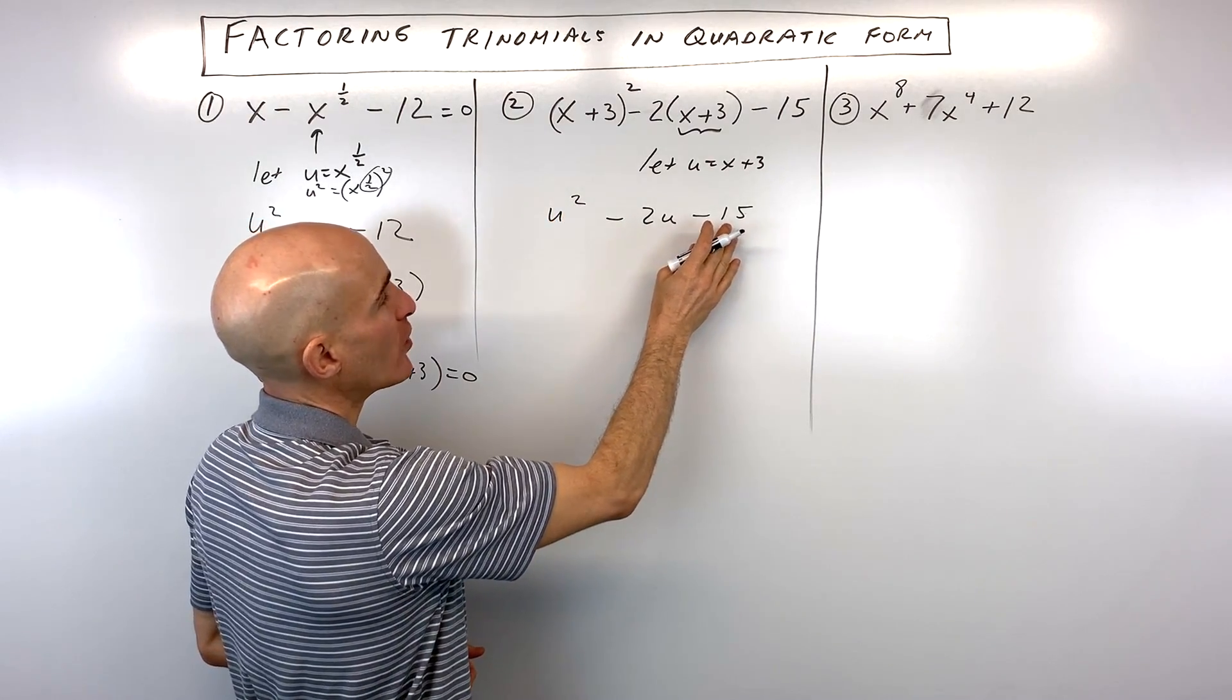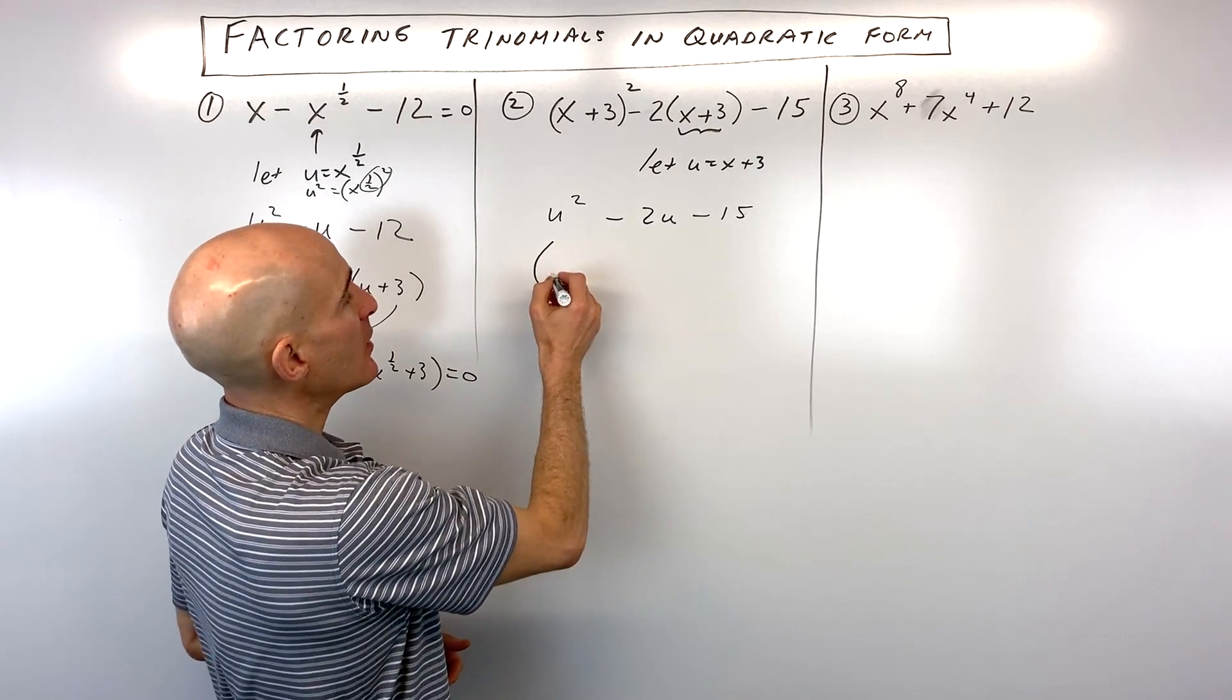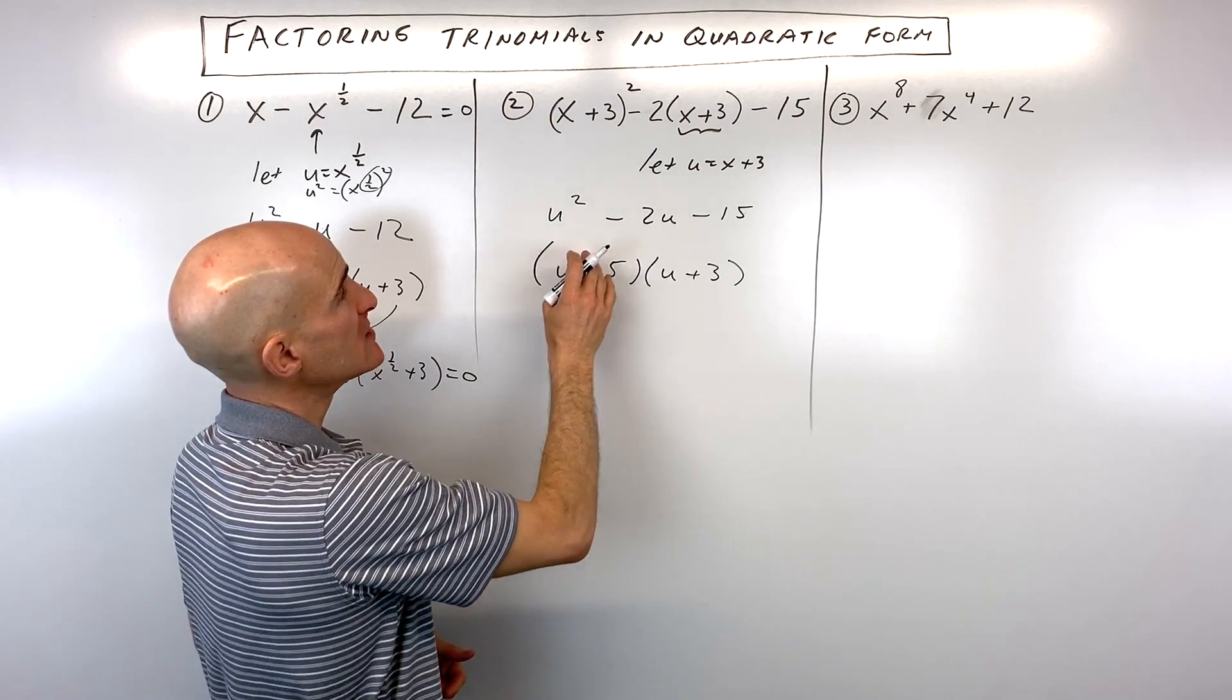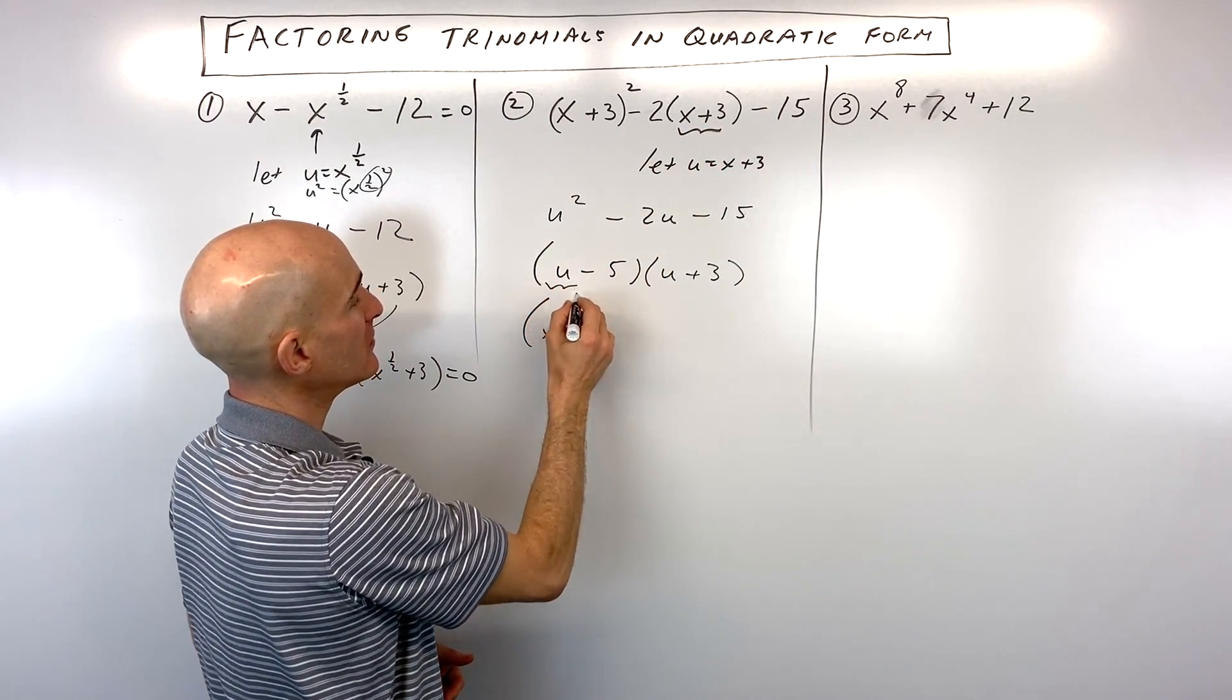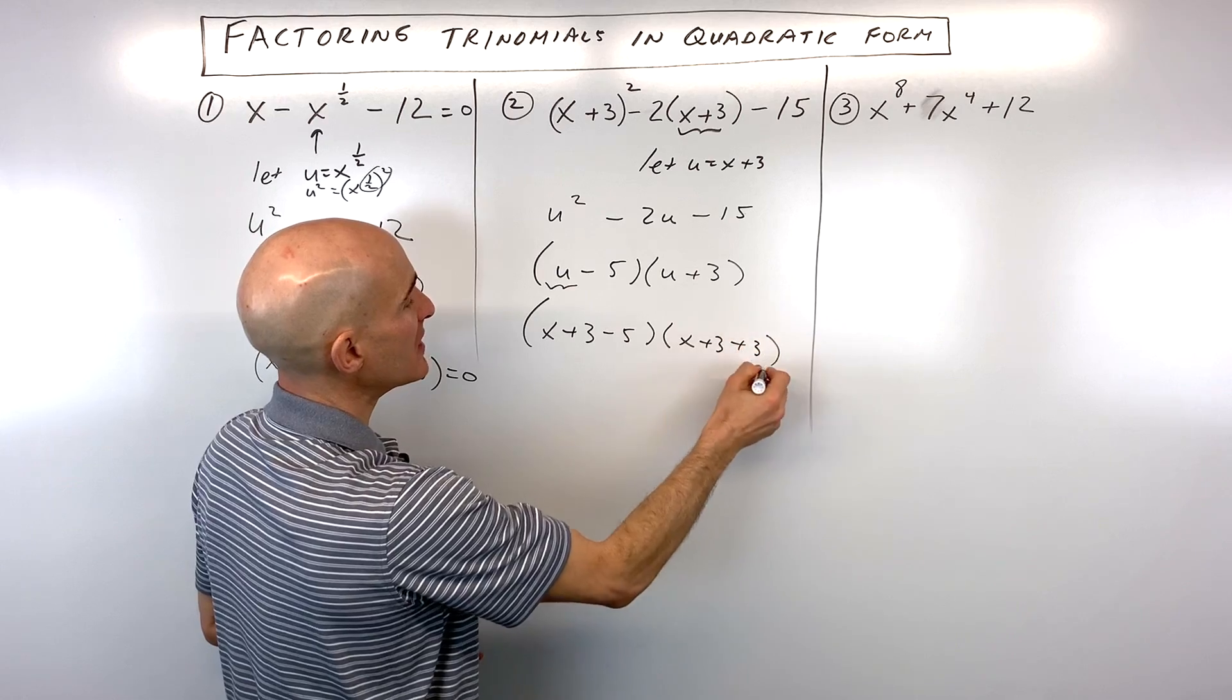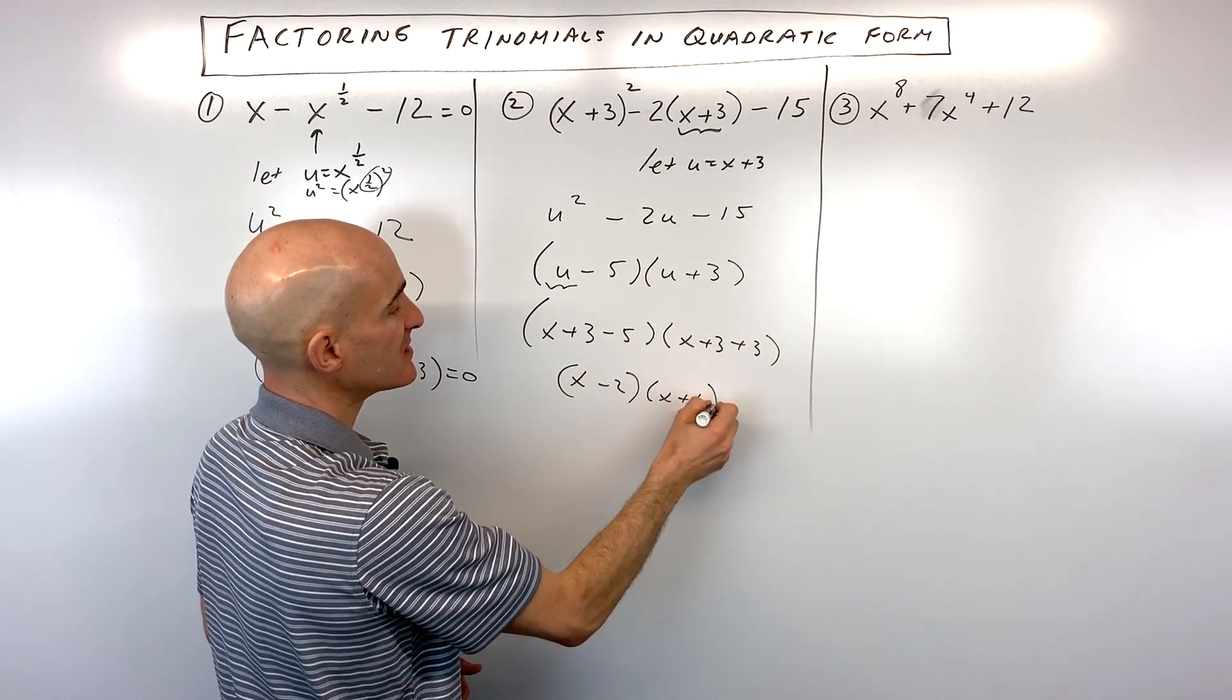So now all we have to do is say what two quantities multiply to negative fifteen but add to negative two, and we can see that's going to be negative five and positive three. But because we know that u is equal to x plus three, we can put that back in place of u. So x plus three minus five, and this would be x plus three plus three, which simplifies down to x minus two and x plus six.